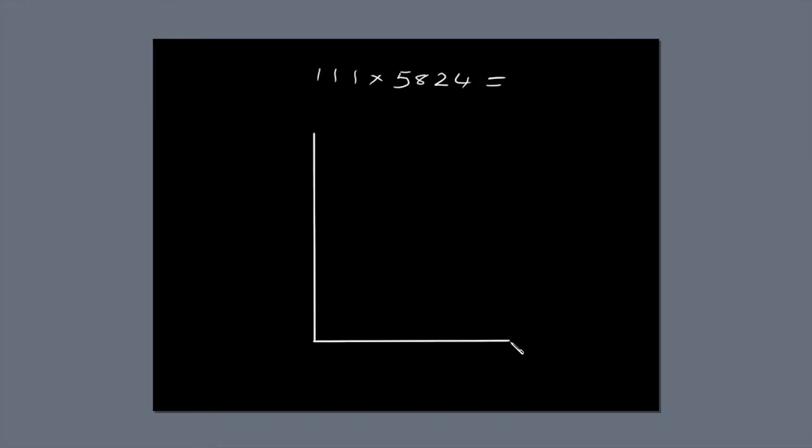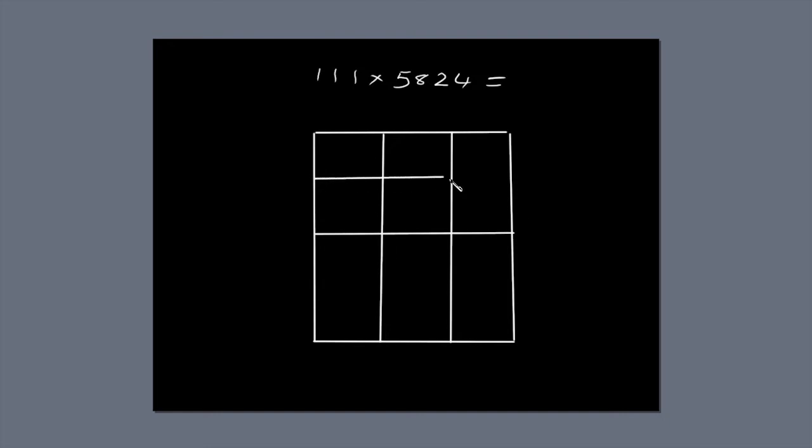The first thing you need to do is draw a box. Subdivide the box into three columns, because the first number, 111, has three digits. You also have to subdivide the box into four rows, because 5,824 has four digits. You end up with a box subdivided into twelve smaller boxes.